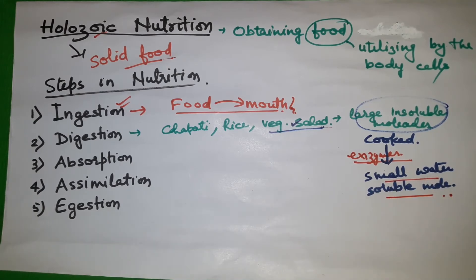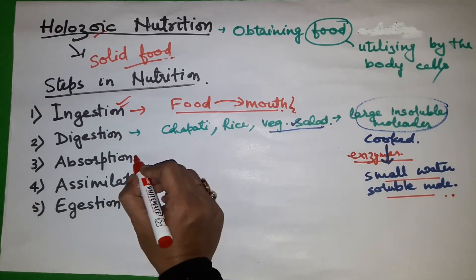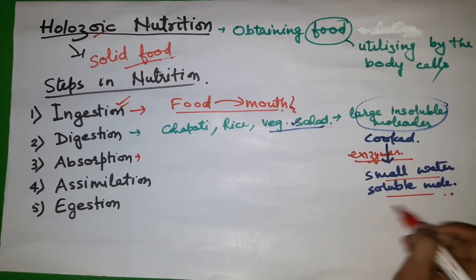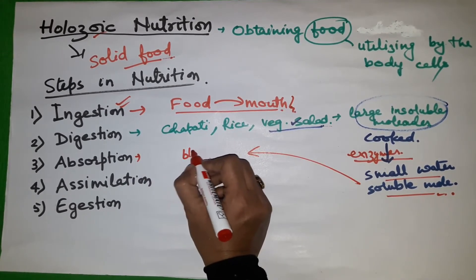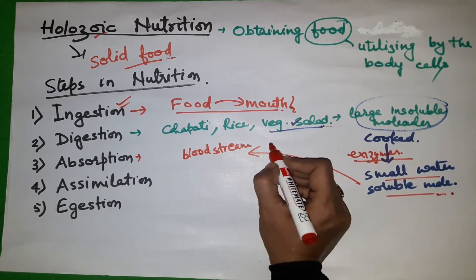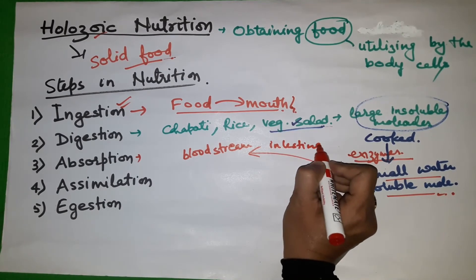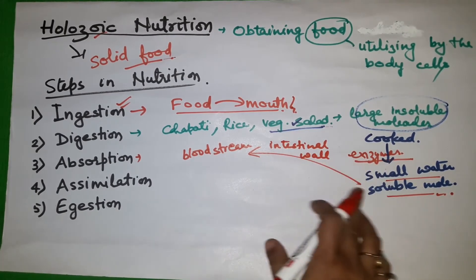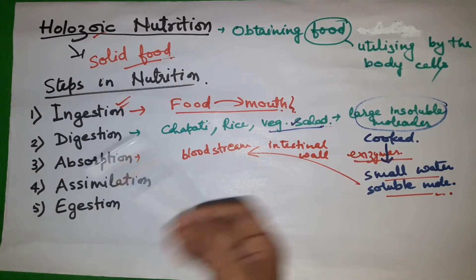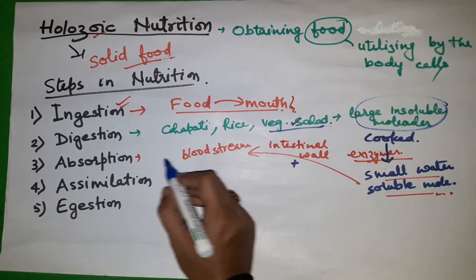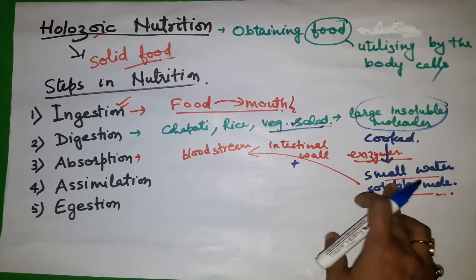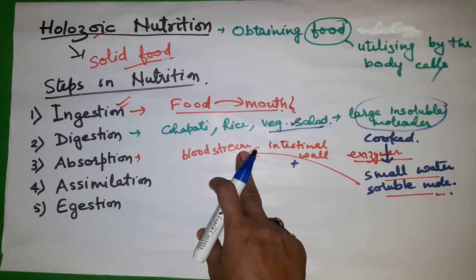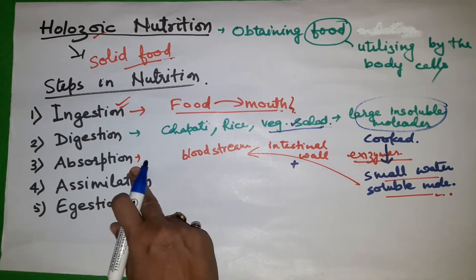The third step is absorption. Absorption occurs when the small water-soluble molecules get absorbed into the bloodstream through the intestinal wall. Blood then carries these nutrients. So absorption is when nutrients, after digestion, get mixed with the bloodstream through the intestinal wall.